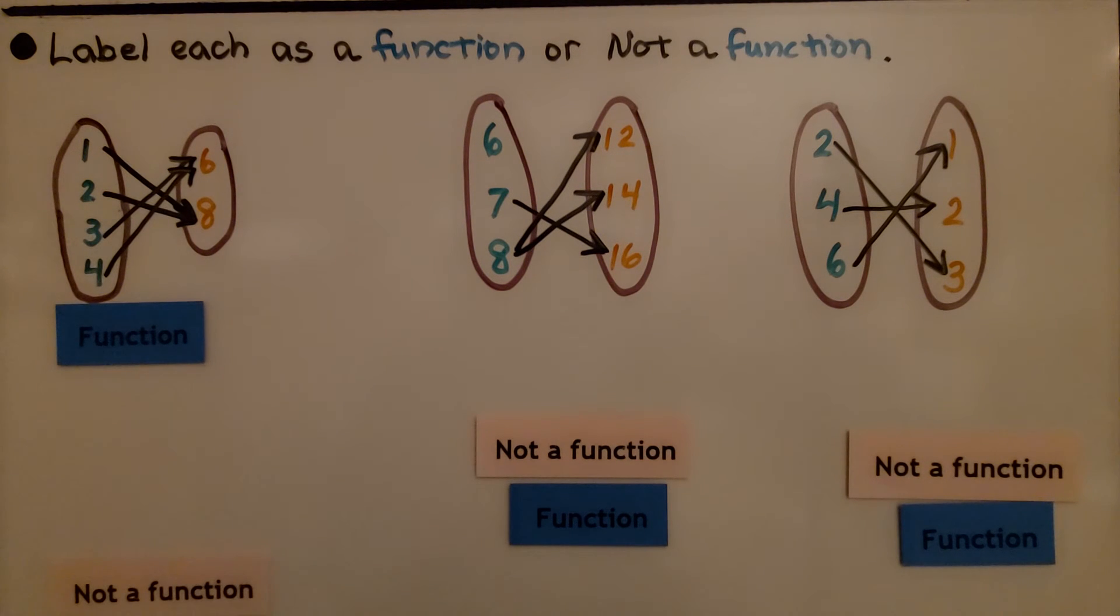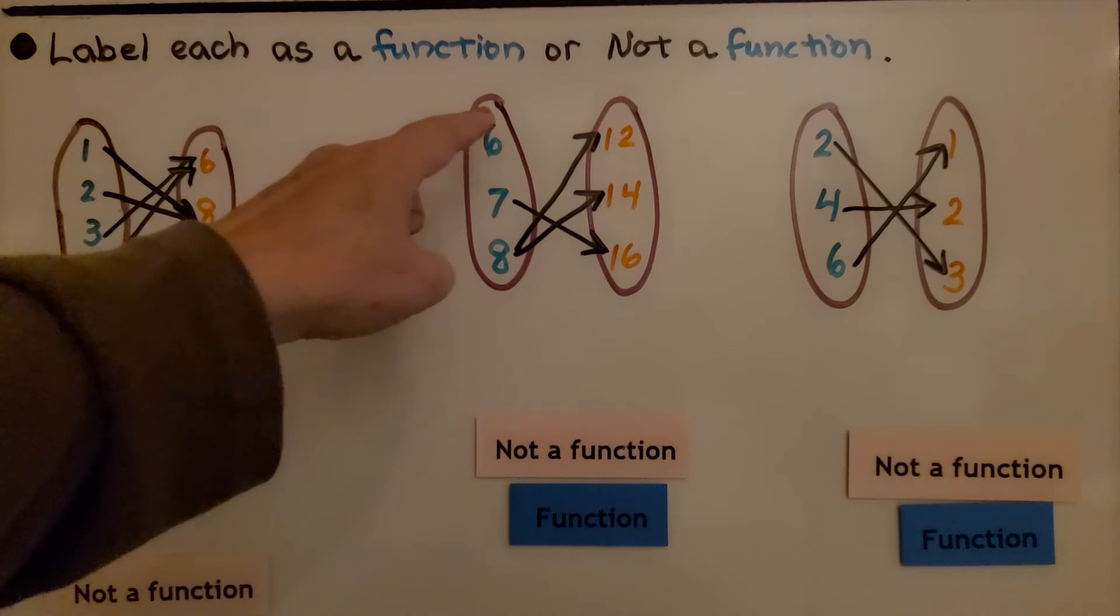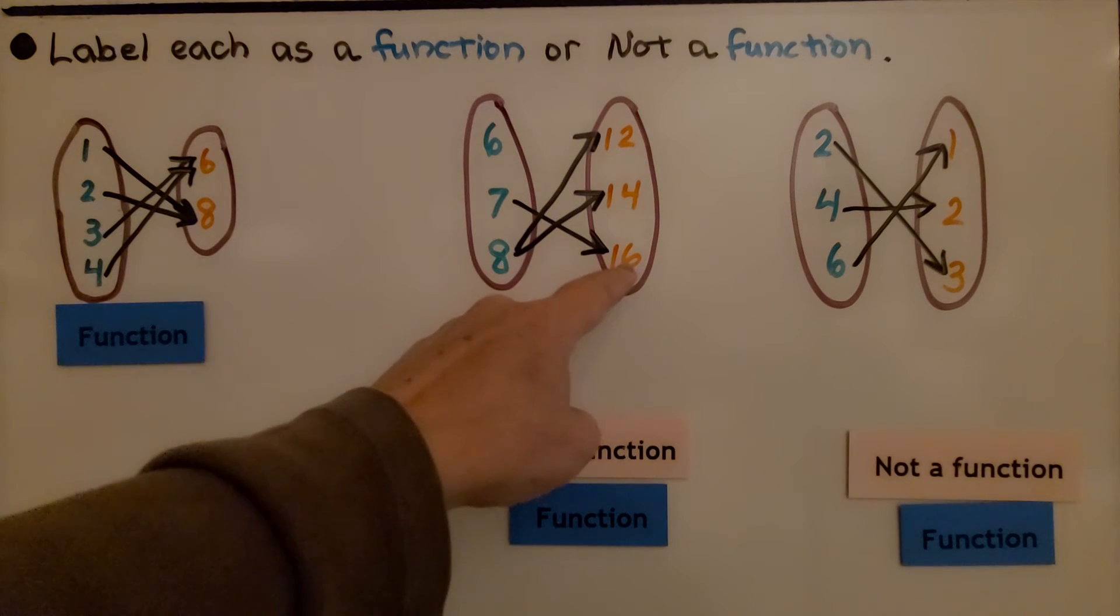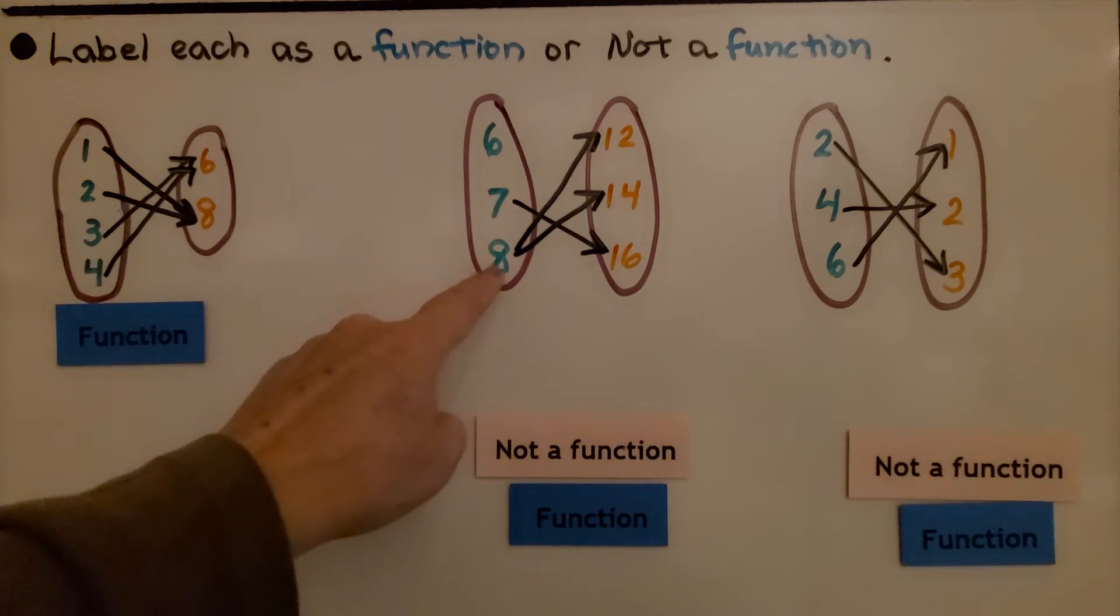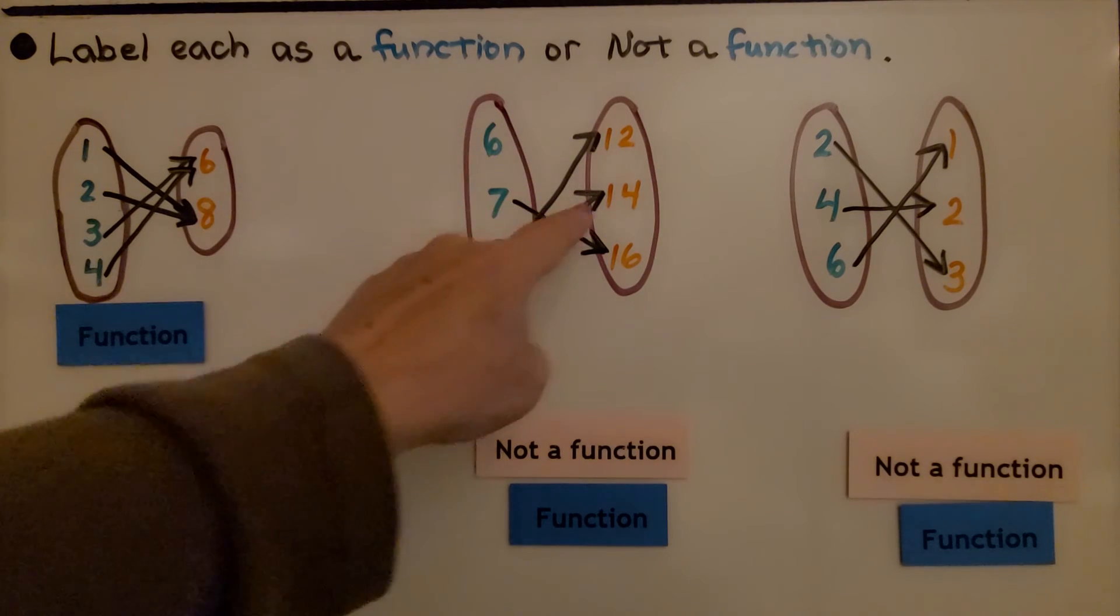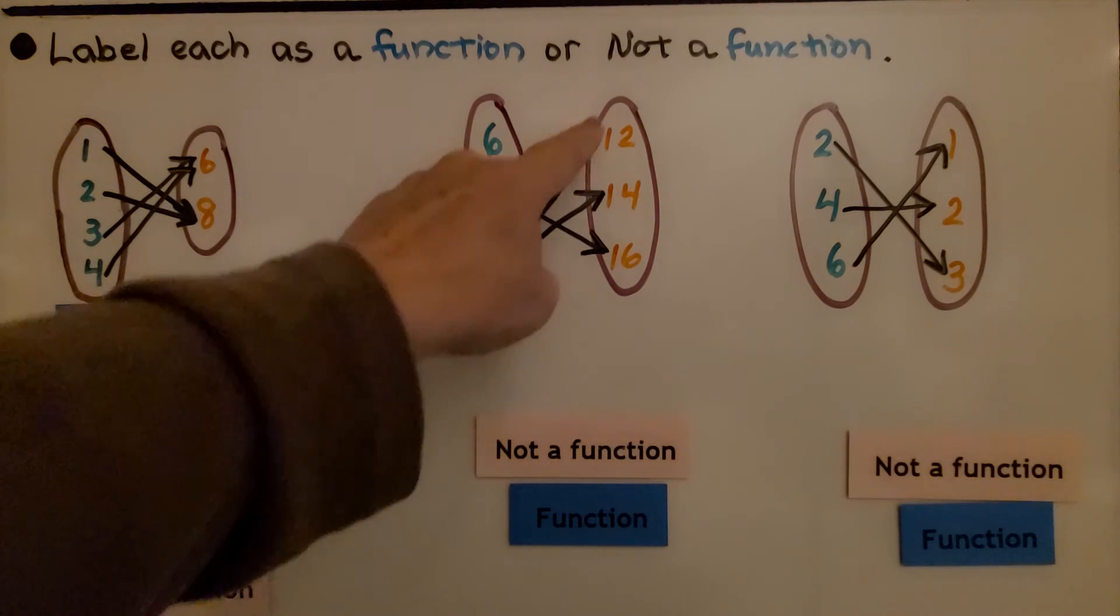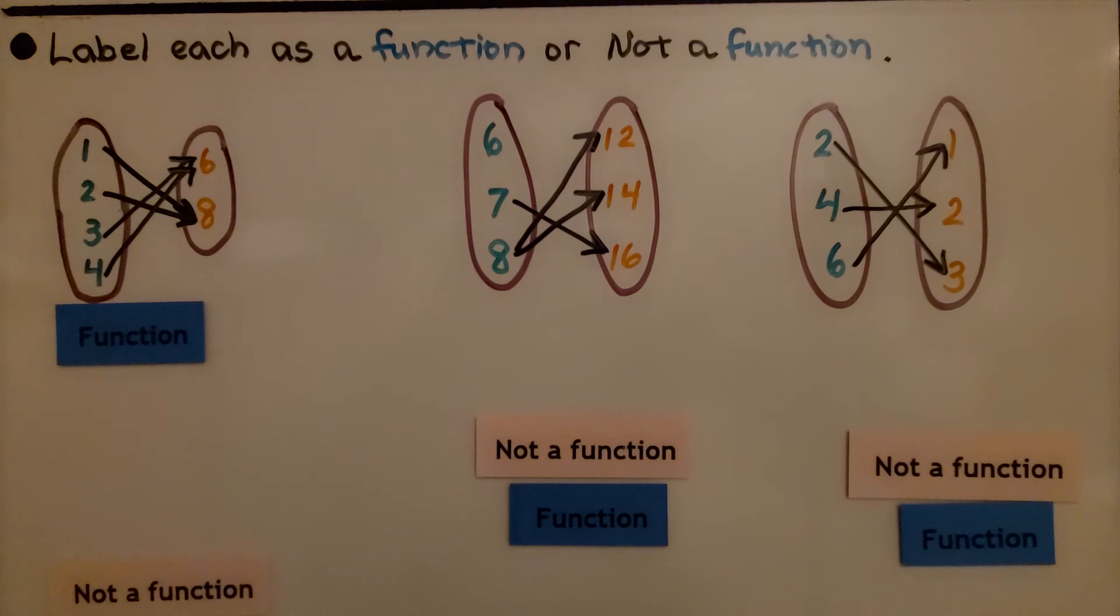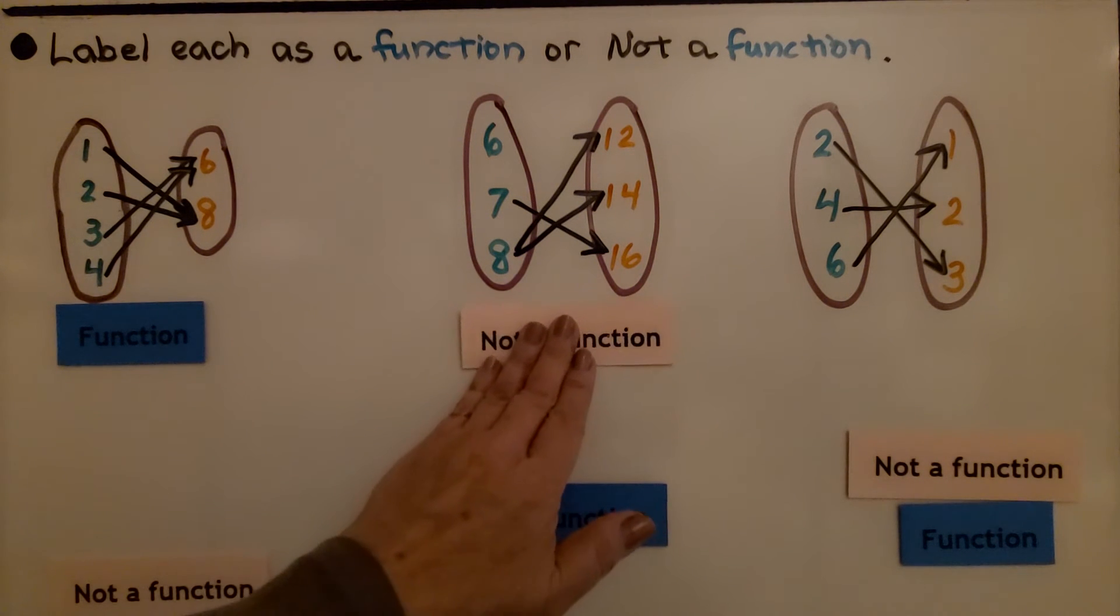Now let's take a look at this one. 6 isn't being sent anywhere. 7 is being sent to 16, but 8 is being sent to both 12 and 14. 8 has two arrows coming out of it. Do you remember the rule? Each input value is only allowed to send one arrow, and that 8 is sending two arrows. That is not a function.